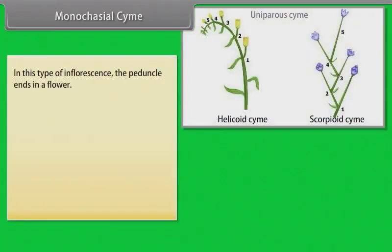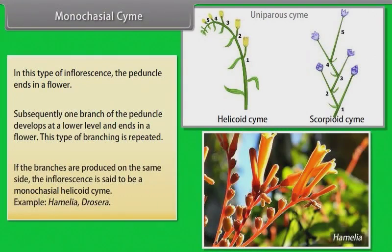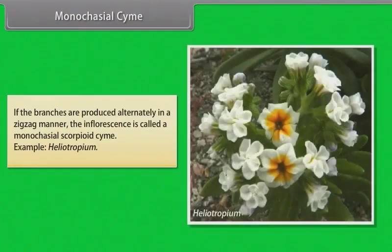In monochasial cyme, the peduncle ends in a flower. Subsequently, one branch of the peduncle develops at a lower level and ends in a flower; this type of branching is repeated. If the branches are produced on the same side, the inflorescence is a monochasial helicoid cyme — example: Hamelia, Drosera. If the branches are produced alternately in a zigzag manner, the inflorescence is called a monochasial scorpioid cyme — example: Heliotropium.